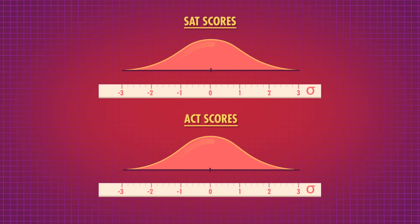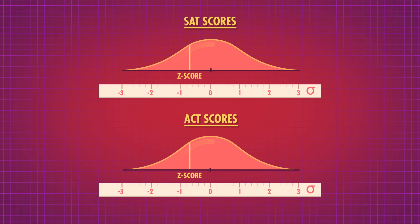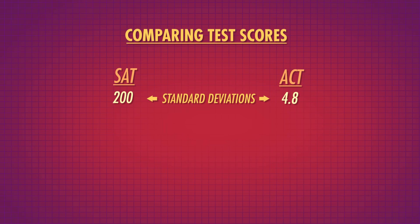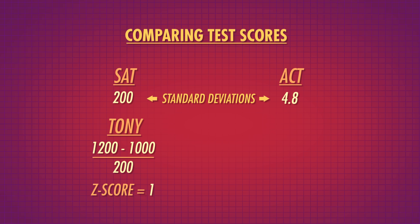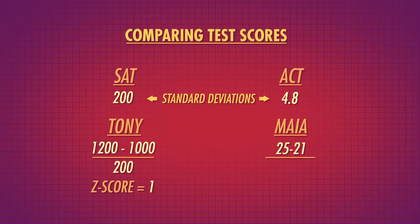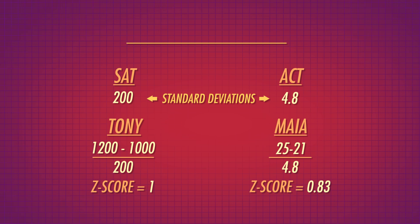This rescales both distributions of scores so that the standard deviation for both is now one unit. A rescaled score, which is called a z-score, of one indicates a point that is one standard deviation higher than the mean. And a z-score of negative one indicates a point that is one standard deviation lower than the mean. Now we can better compare two students: Tony who got a 1200 on the SAT and Maya who got a 25 on the ACT. First we subtract the mean score from each and then divide by the standard deviation. Let's say those standard deviations are 200 and 4.8 for the SAT and ACT respectively. So Tony's score of 1200 minus 1000 divided by 200 gives a z-score of 1, which means it's one standard deviation above the mean. And Maya's 25 becomes 25 minus 21 divided by 4.8, giving a z-score of 0.83, which means her score is 0.83 standard deviations above the mean.